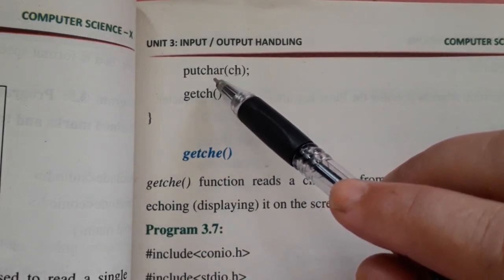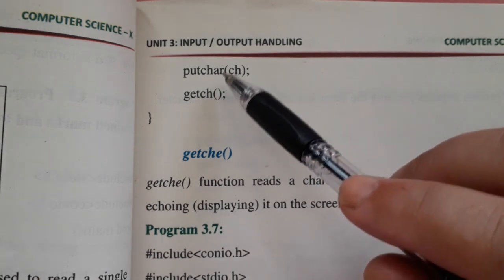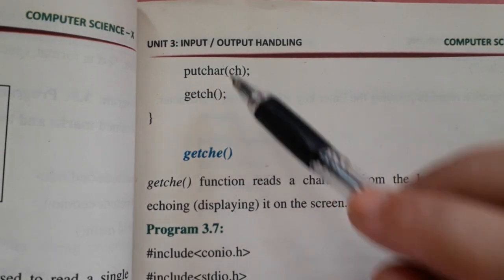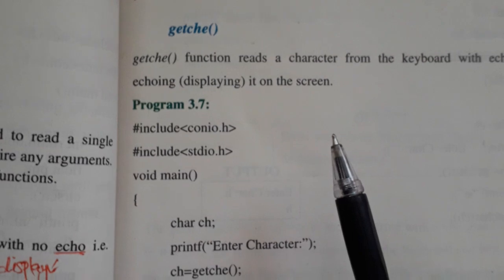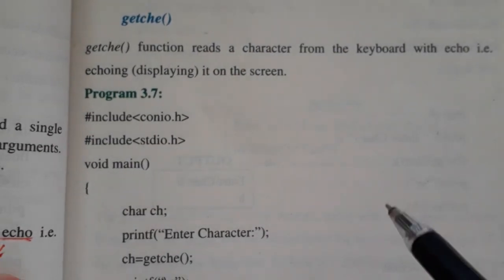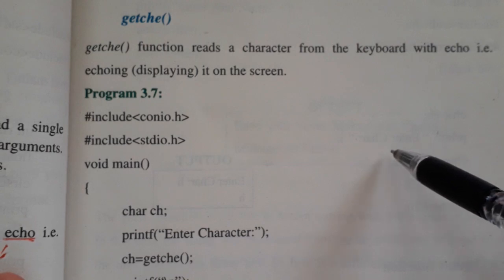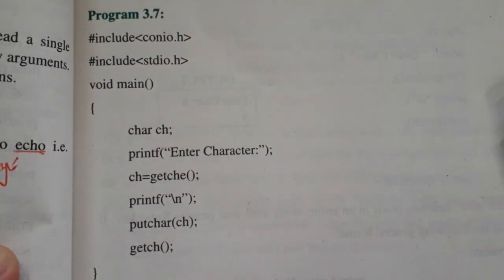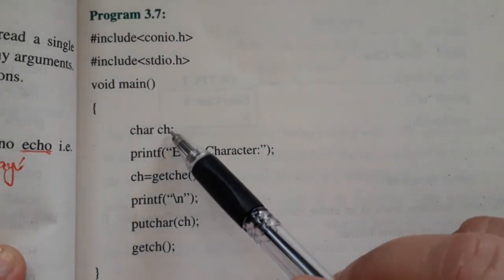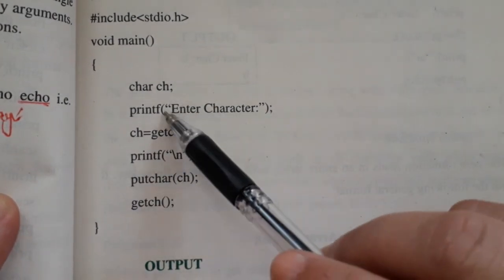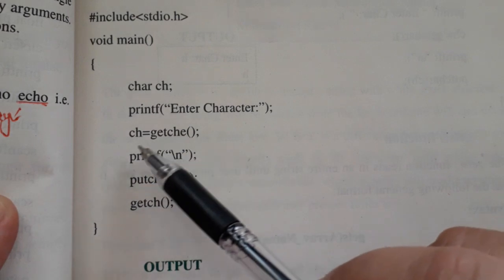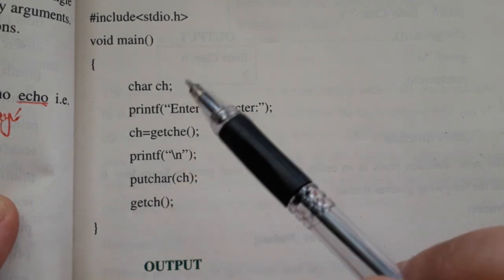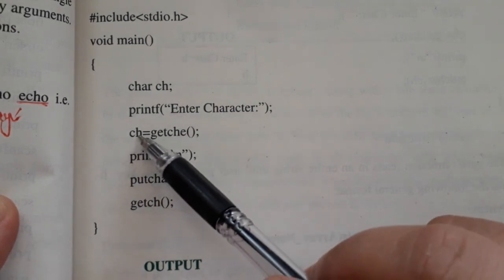Getch function نے کی بورڈ سے character لے لیا، ch میں store کر لیا لیکن نظر نہیں آ رہا - تو اس کو display کرنے کے لیے putchar function استعمال ہوتا ہے۔ اس کے بعد ہے getche function - بالکل اسی طرح کام ہے لیکن یہ جب ہم کی بورڈ سے character enter کر لیتے ہیں تو اس کو screen پہ دیکھاتا ہے۔ اب اس program میں: ch ہم نے variable declare کیا، printf enter character، ch is equal to getche۔